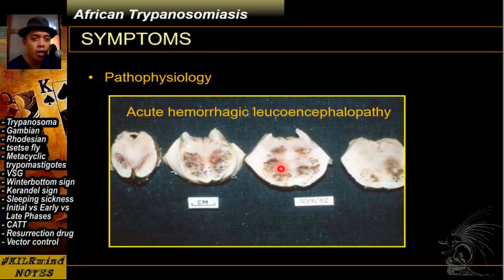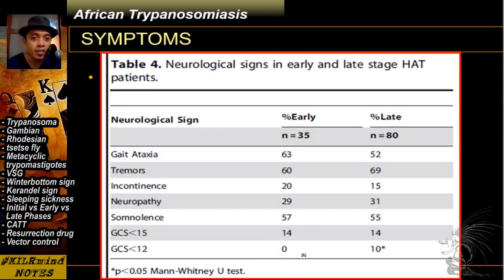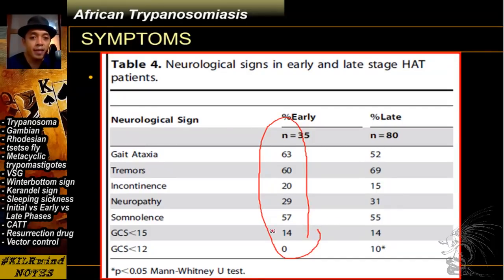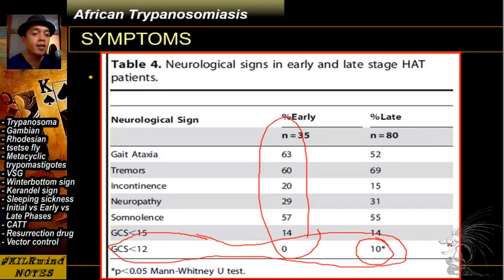This is a biopsy of a brainstem. A table from a study by McLean et al. in 2012 shows that neurologic signs appear even in the early stages. However, the difference is that a moderate GCS depression — a GCS score of less than 12 — is only seen in late stages. So a GCS score of less than 12 can be a good gauge that a patient is already in the meningoencephalitic stage.